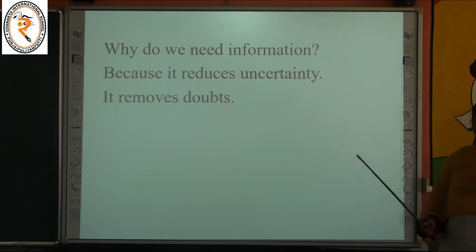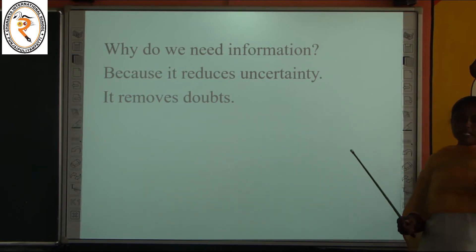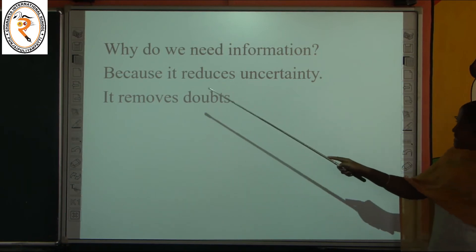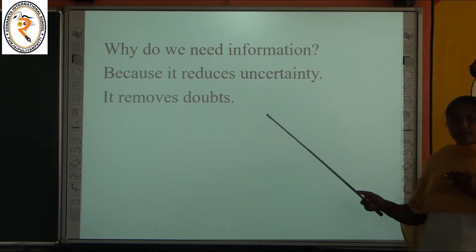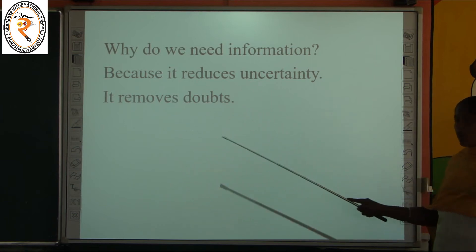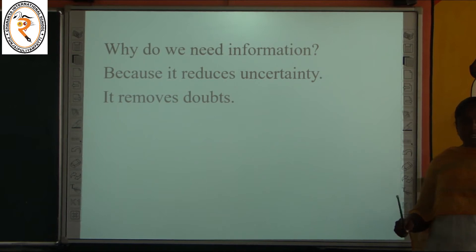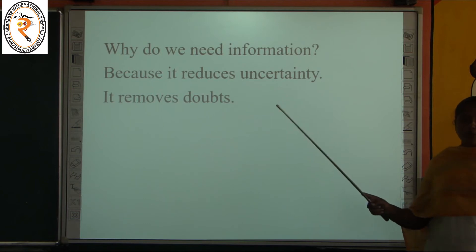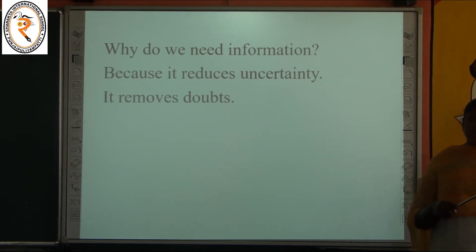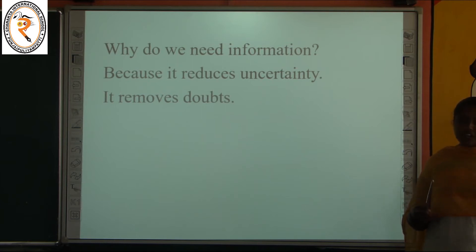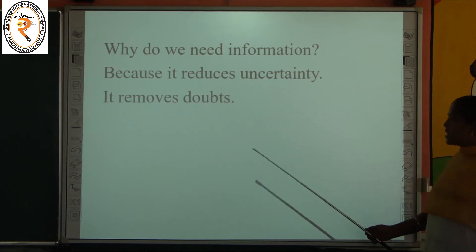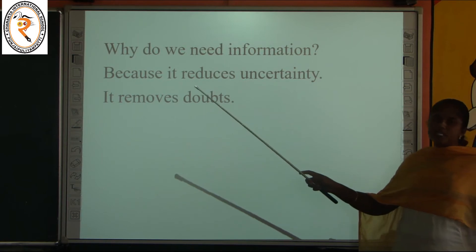When I ask which is your favorite color and you answer red, blue, pink, or yellow — that is information. I am able to know which is your favorite color. So information is knowing about someone or something. I am knowing about you by asking your name. I am knowing about something by looking at a tree and knowing it is a tree.